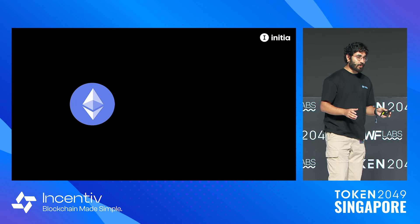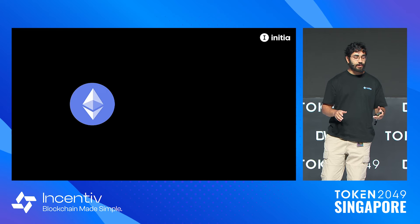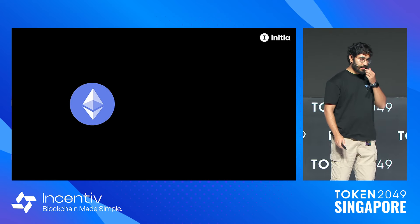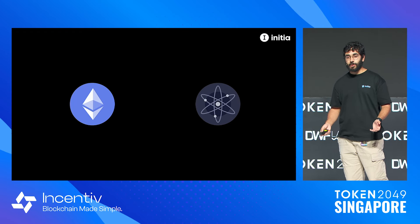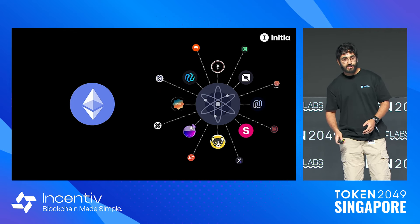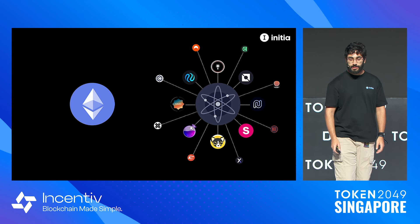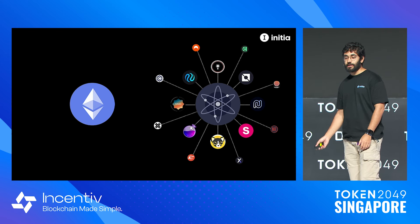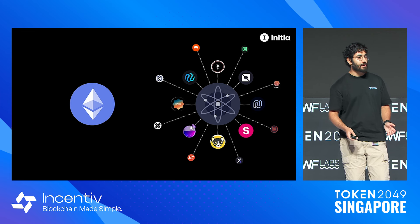Before we dive into what Initia is, I want to give a little background on how rollups came to play and how the multi-chain evolved over the past few years. We started off with Ethereum, then we had this idea of Cosmos — the first iteration of basically app chains. Cosmos grew into its own ecosystem of lots of app chains: Osmosis, Stride, Neutron, Terra, Mars, everything in between, with a native system of interoperability with IBC.